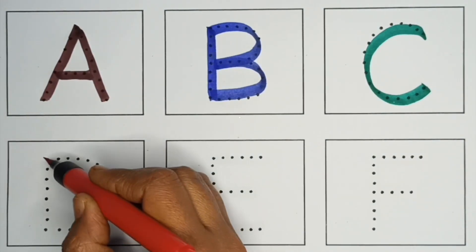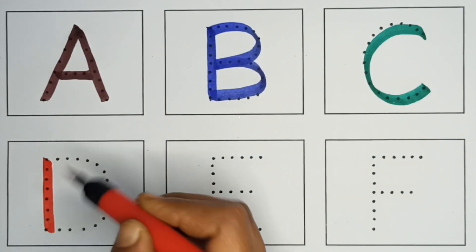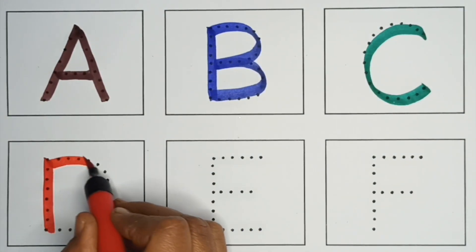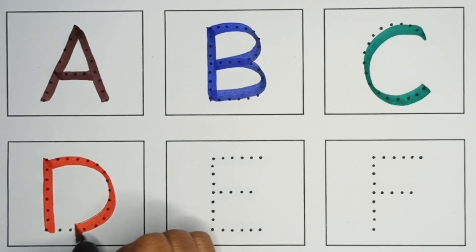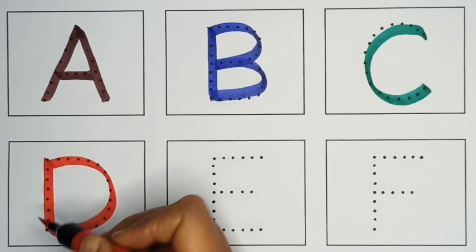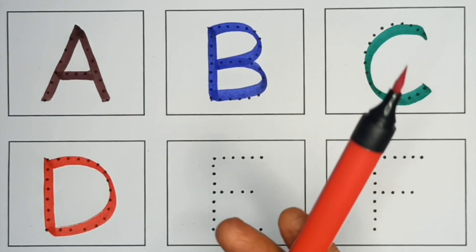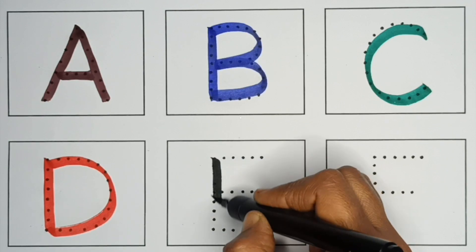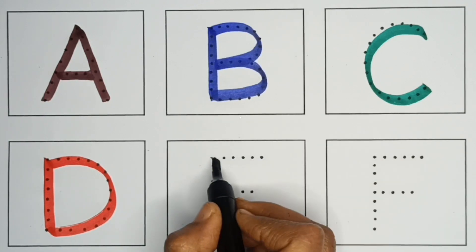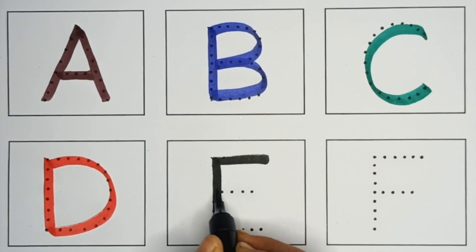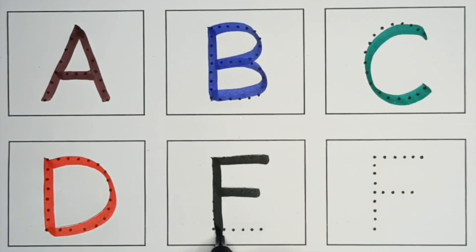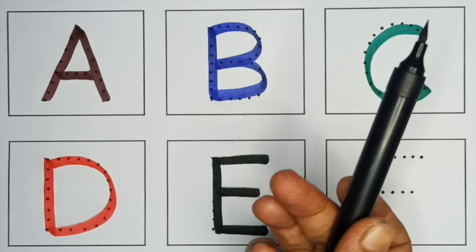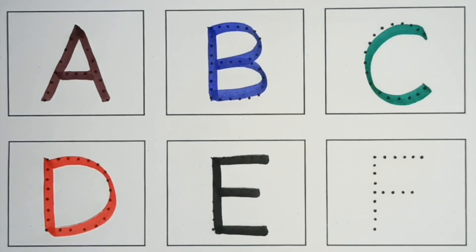D. D for dog, red color. E. E for elephant, black color.